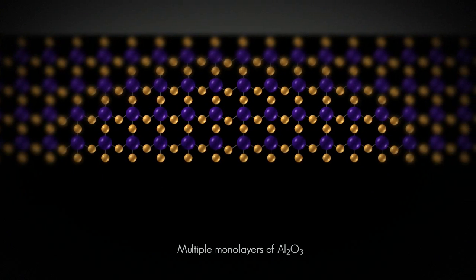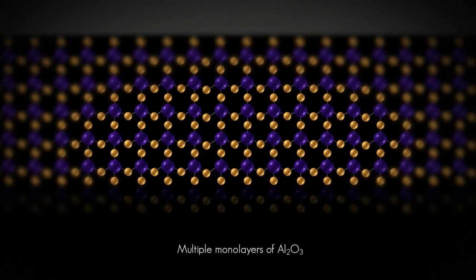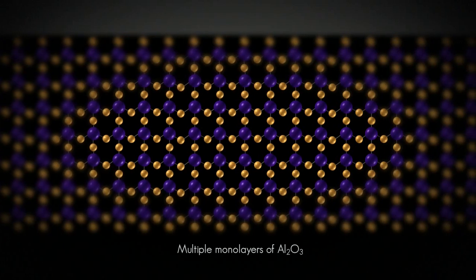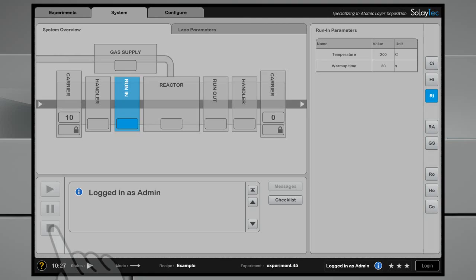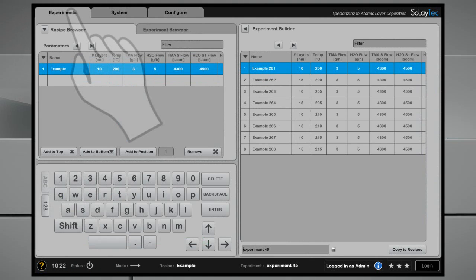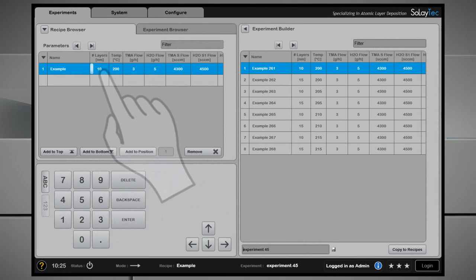When the predefined layer thickness is achieved, the substrate is cooled down and ready for the next process step. An easy user interface allows you to create your own recipes for chemical settings, temperature and layer thickness.